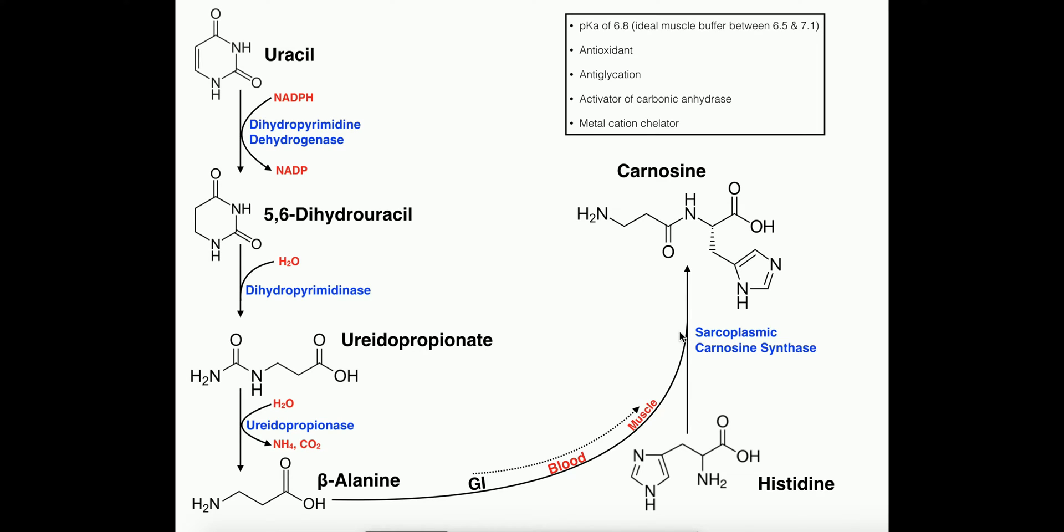In this video we're going to discuss some basic functions of a dipeptide referred to as carnosine which is important in skeletal muscle. We're also going to discuss its biosynthesis, ultimately from the pyrimidine uracil, which when in the nucleotide form is actually found in RNAs. So let's begin with the biosynthetic pathway for carnosine.